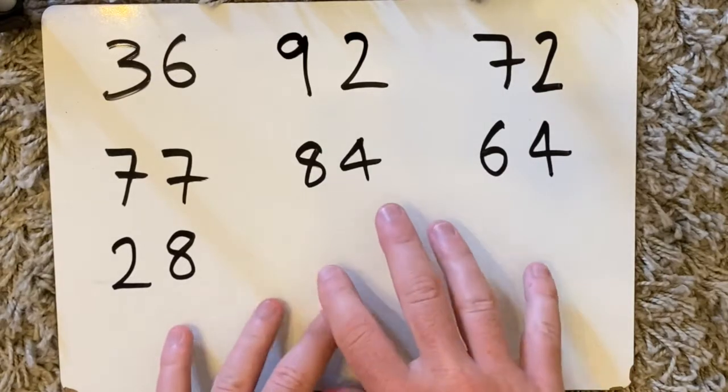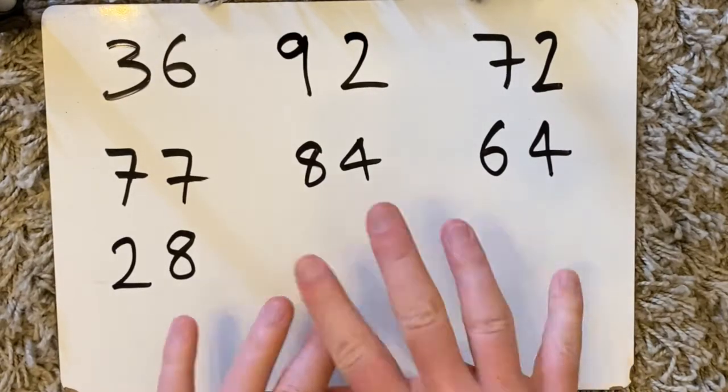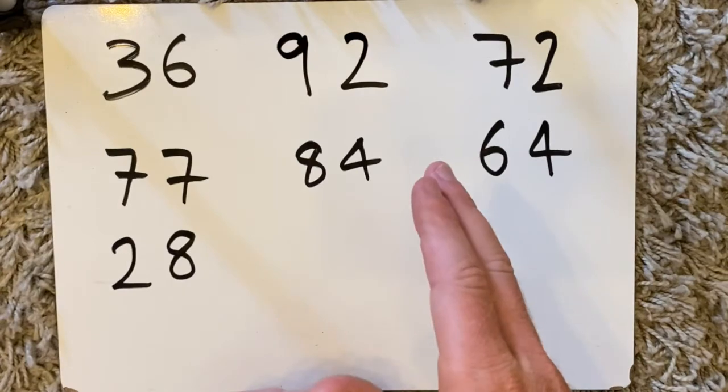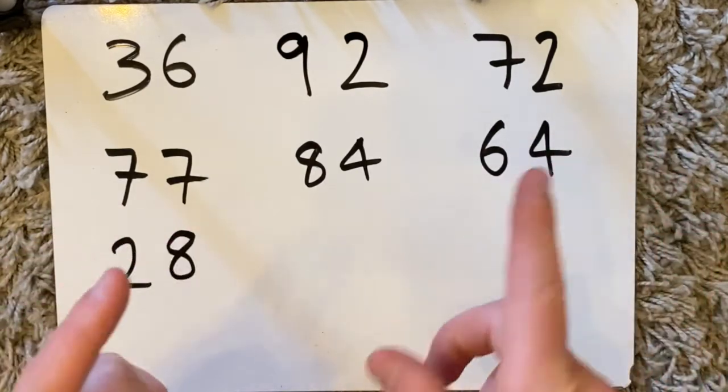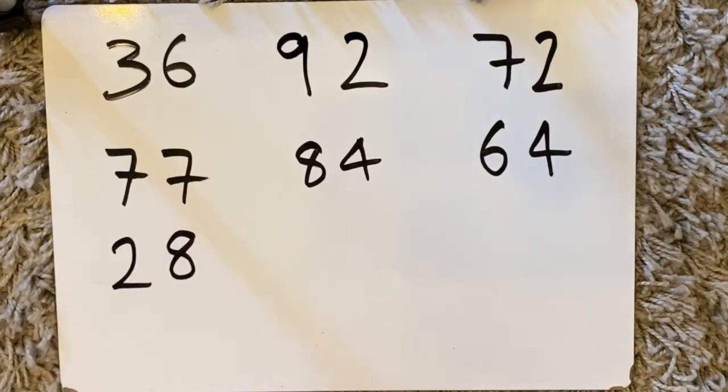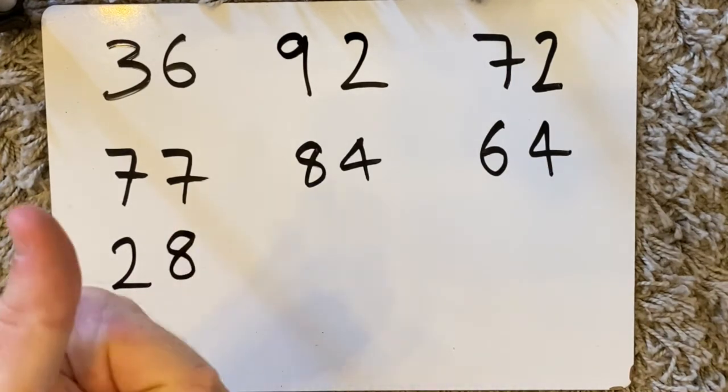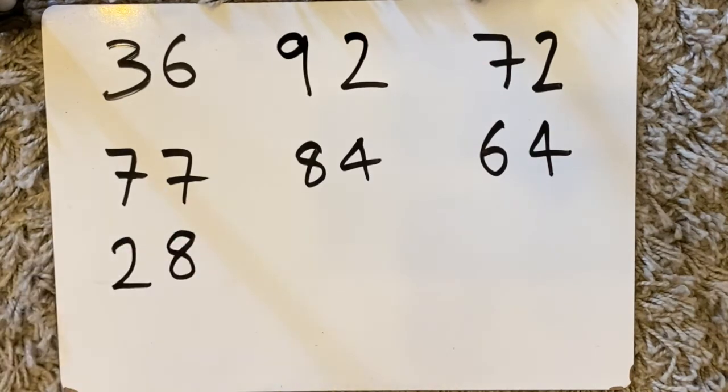I've now written 7 brand new numbers on my whiteboard and what I'd like you to do is pause the video again and I'd like you to add these 7 numbers up using the technique that I showed you earlier in this video. And what I'd like you to do is time yourself again and I'd like to see if 1 you got the correct answer and 2 did you get the correct answer much quicker than you did before?